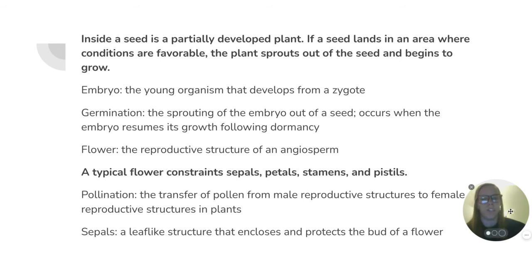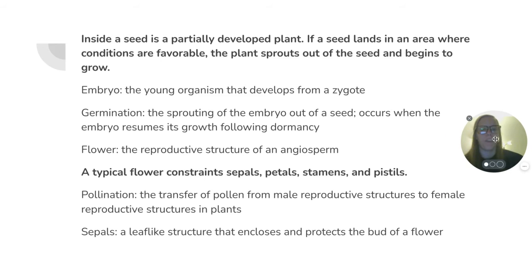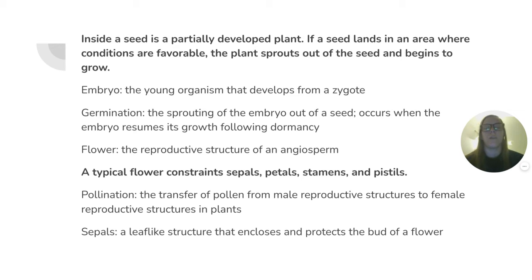Inside a seed is a partially developed plant. If a seed lands in an area where conditions are favorable, the plant sprouts out of the seed and begins to grow. An embryo is the young organism that develops from a zygote. Germination is the sprouting of the embryo out of a seed; it occurs when the embryo resumes its growth following dormancy.